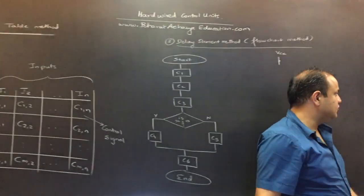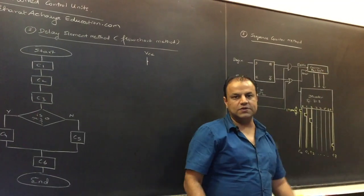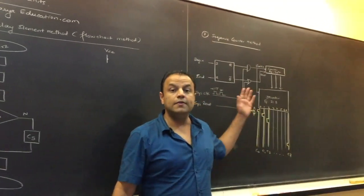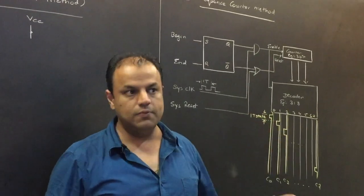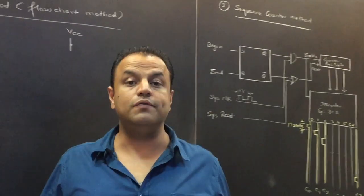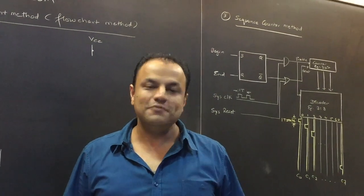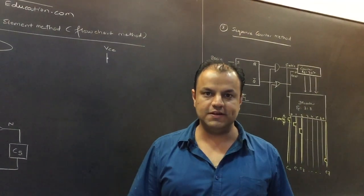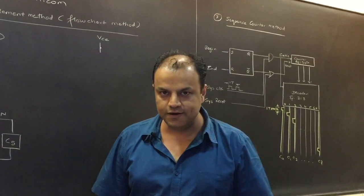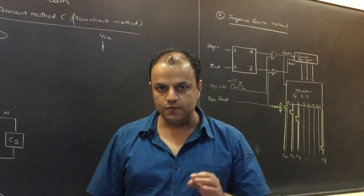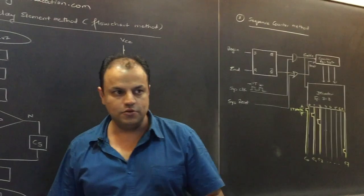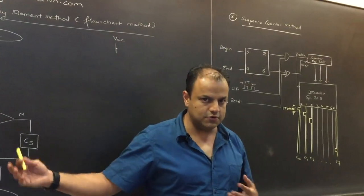The flow chart method had one serious drawback, and that drawback is overcome in the sequence counter method. From an exam point of view, this is where your marks lie. When you get a 10-mark question on hardwired control units — from my experience of teaching the subject for 18 years — I can fairly say this video alone will cover your 10 marks in the exam.